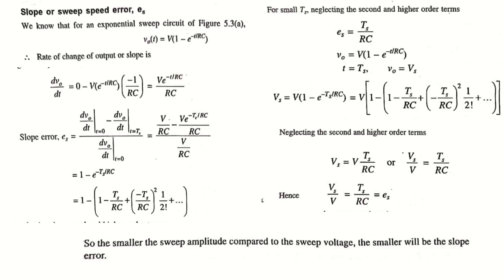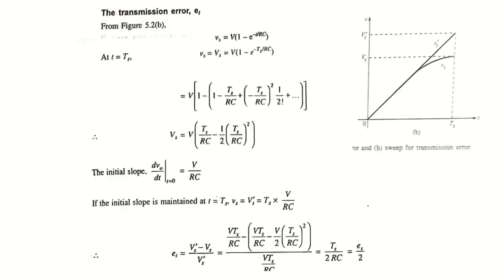Coming to the transmission error: as shown in the figure, the transmission error is defined as the difference between input and output divided by the input signal. If the input signal is an ideal ramp VS', the formula is (VS' − VS) / VS'. Here VS = V × (1 − e^(−TS/RC)), and at t = TS the output voltage amplitude is VS.